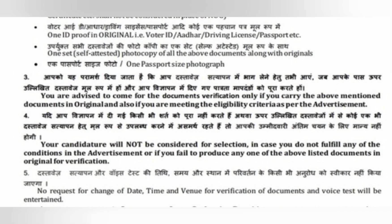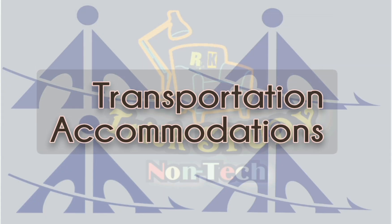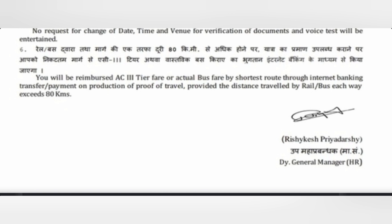And these are just for your guidance — you are advised to come for the document verification only if you carry the above mentioned documents in original and also if you are meeting the eligibility criteria as per the advertisement. Aage dekhte hain about transportation and accommodation — Airport Authority yahan par AC 3-tier ki fare deti hai aur actual bus fare deti hai, aur journey distance 80 km se upar honi chahiye.